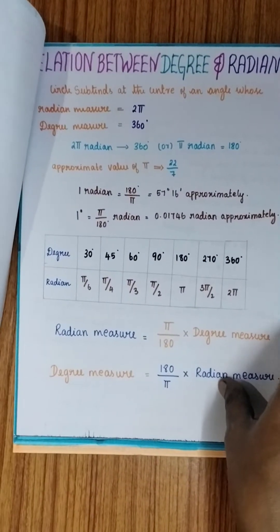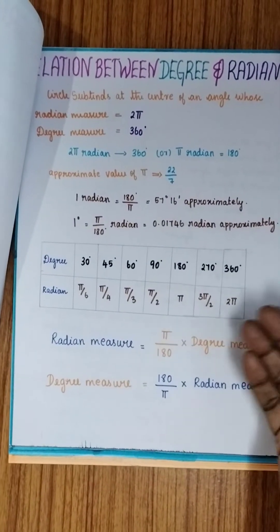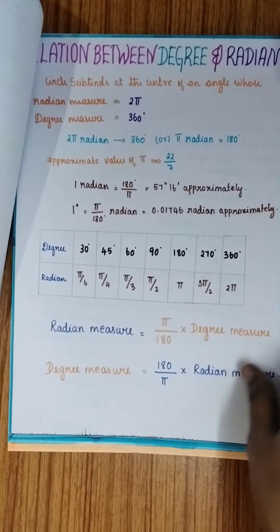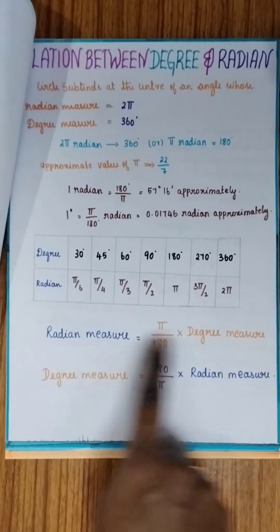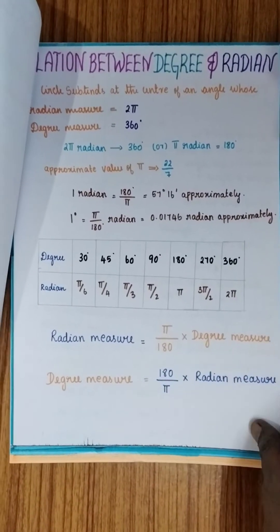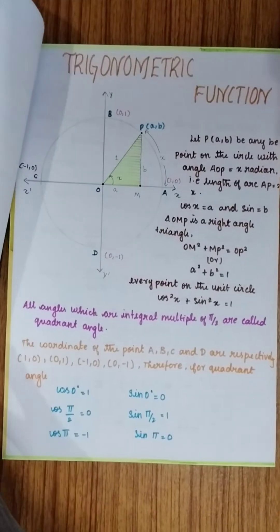On the next page she is given what is the relation between degree and radian measure because in class 11 only we will be learning how do we introduce the values of pi. So that is being explained and the degree conversion and the radian conversion formula is being given here.